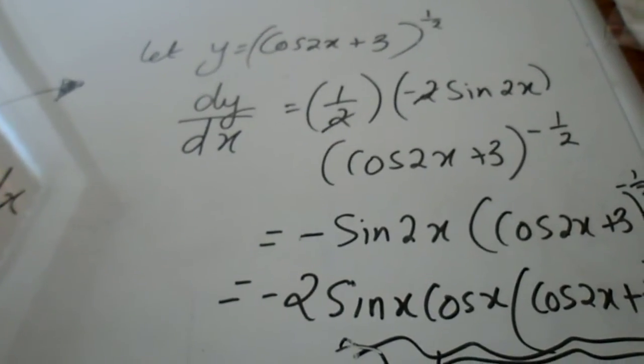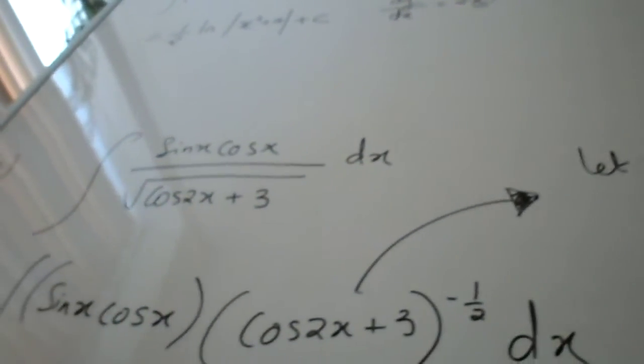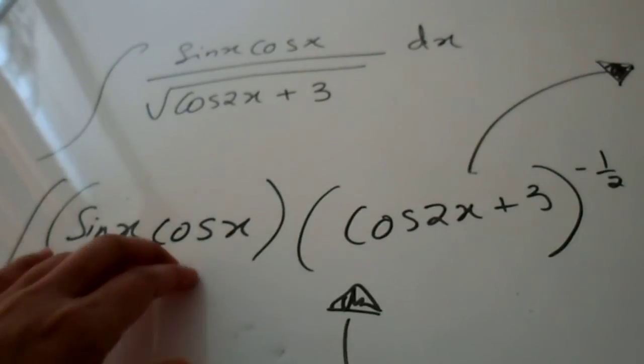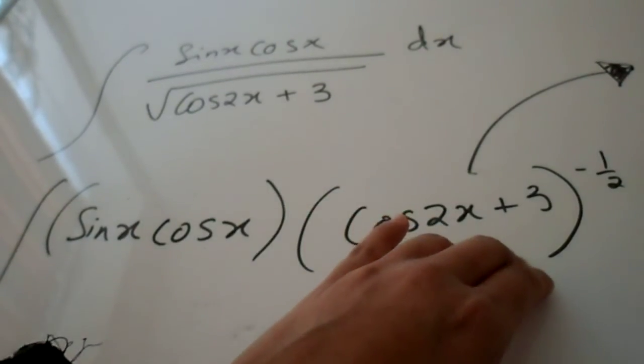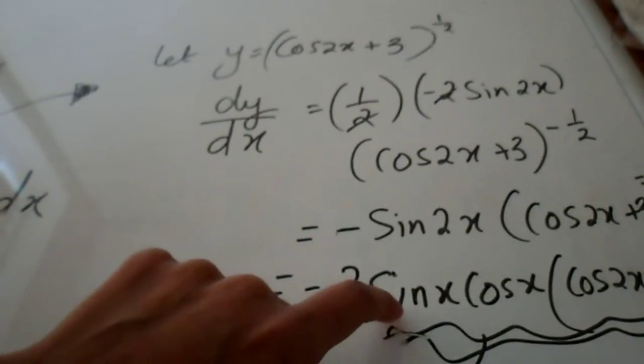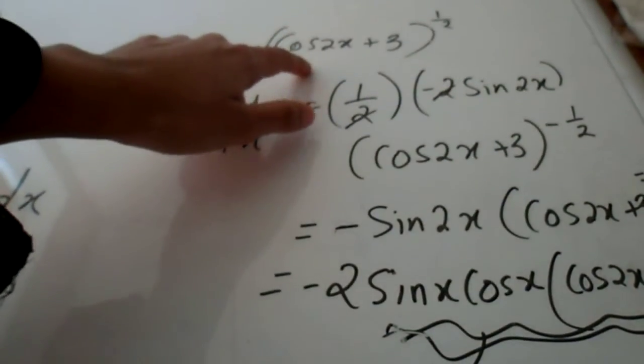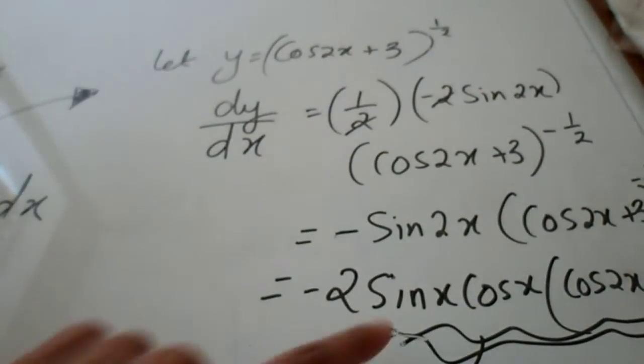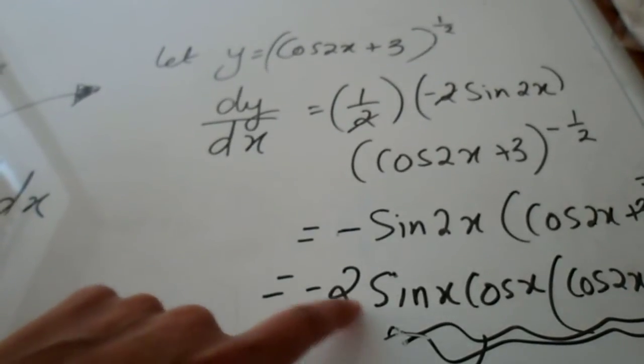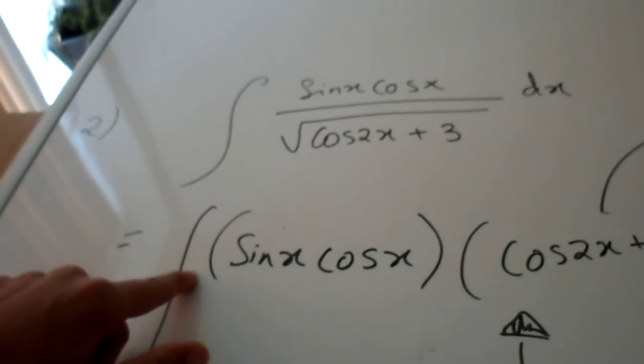Now the next step is for you to notice that the sin x cos x cos 2x plus 3 to the power of minus half is identical to what you got in the derivative of cos 2x plus 3 to the power of half. The only difference is yet again being the constant. The constant here is a minus 2 whereas in the question the constant is 1.